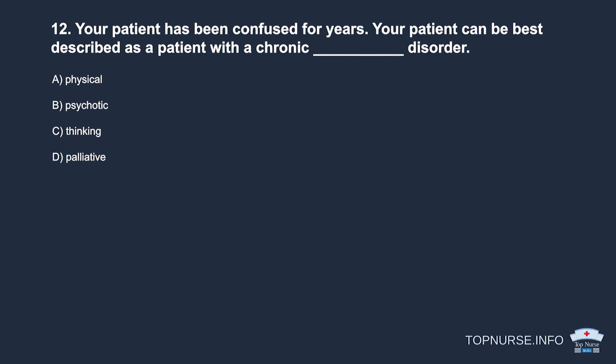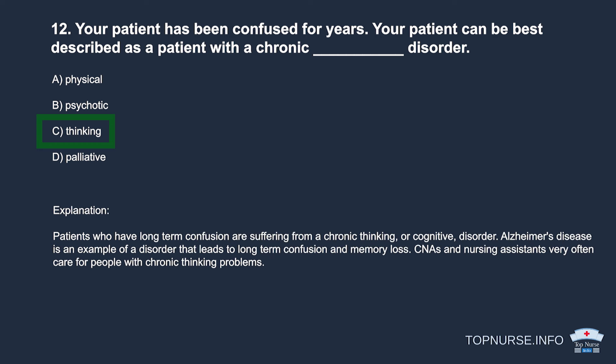Question 12: Your patient has been confused for years. This patient can best be described as a patient with a chronic _____ disorder. a. Physical. b. Psychotic. c. Thinking. d. Palliative. Correct answer: c. Thinking. Patients with long-term confusion suffer from a chronic thinking, or cognitive, disorder. Alzheimer's disease is an example. CNAs very often care for people with chronic thinking problems.